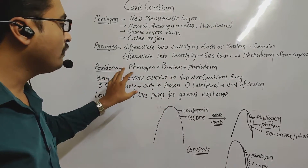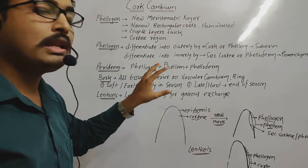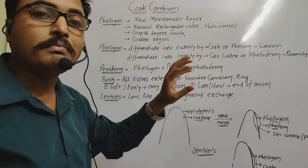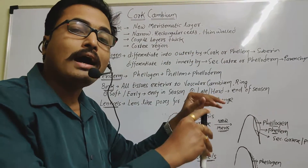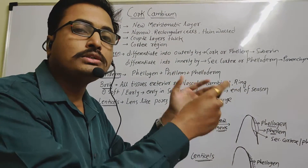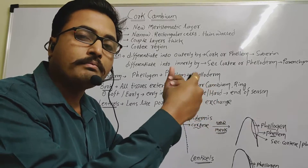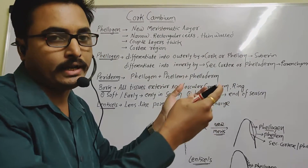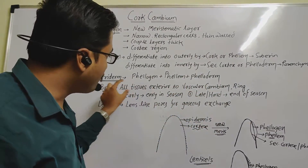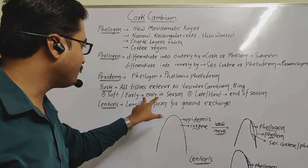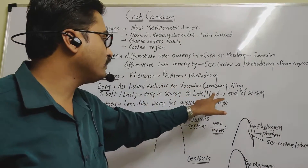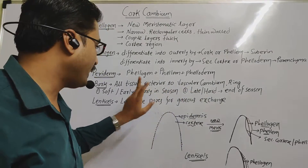Bark is equal to secondary phloem plus periderm. This is the definition and composition of bark.